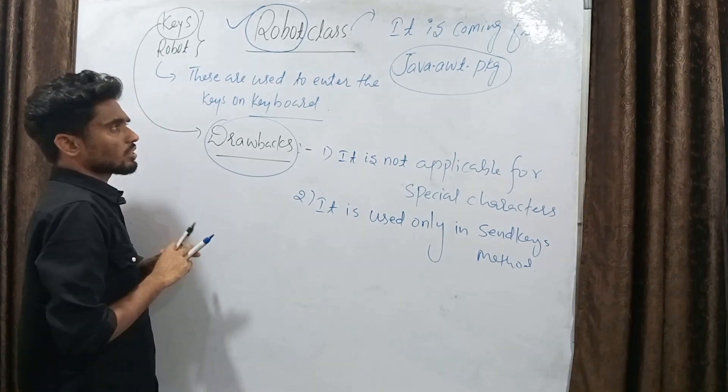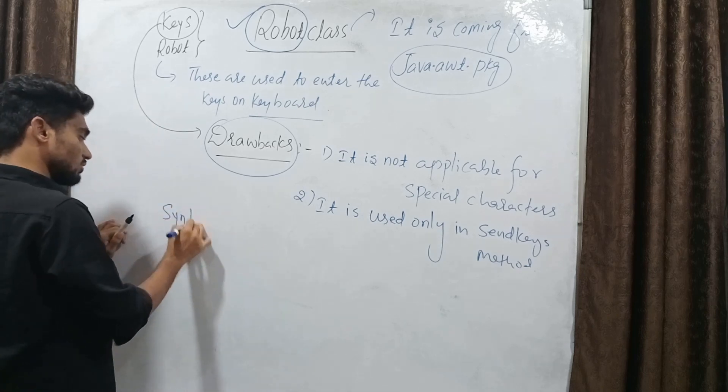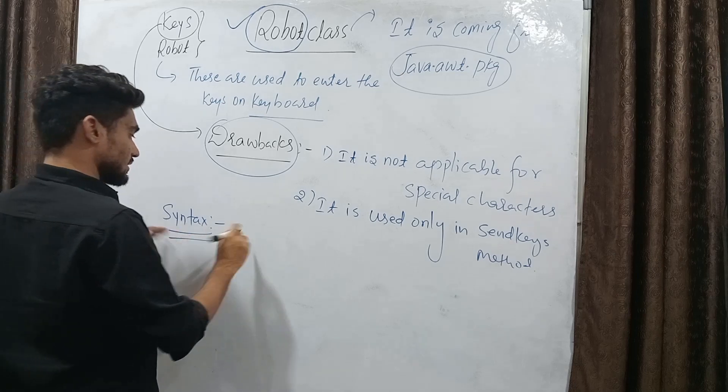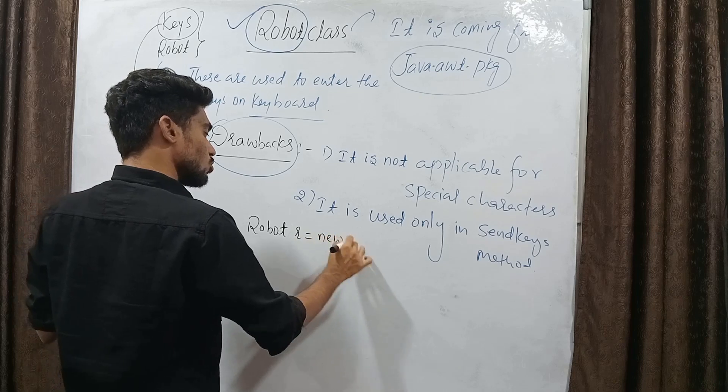Then what is the syntax for this one? Syntax is very easy, observe. First of all, you have to create object of robot class. So, robot r equals new robot.